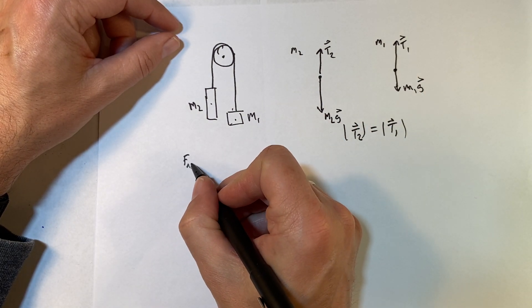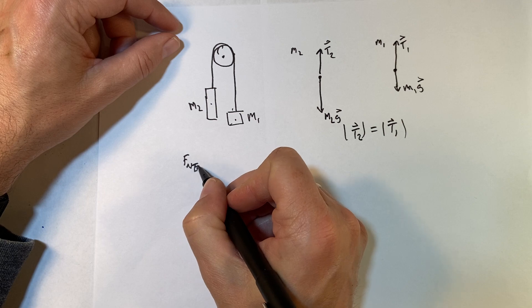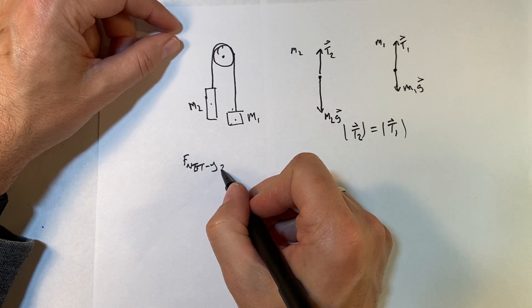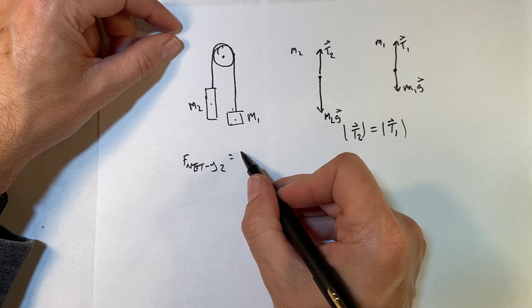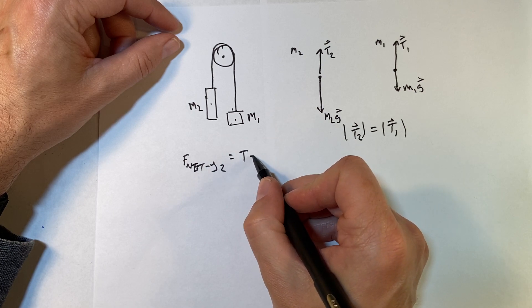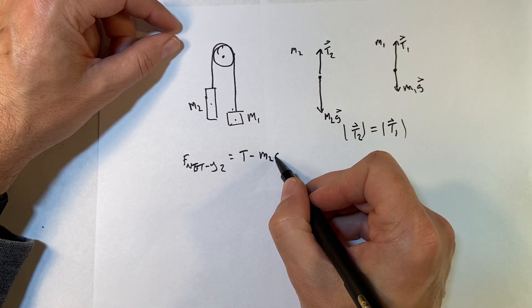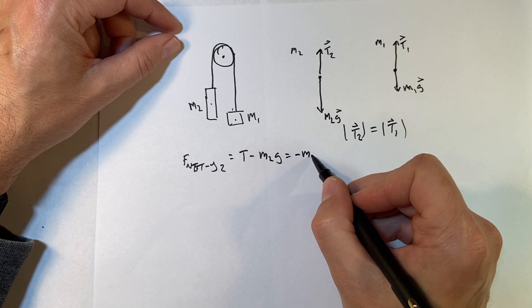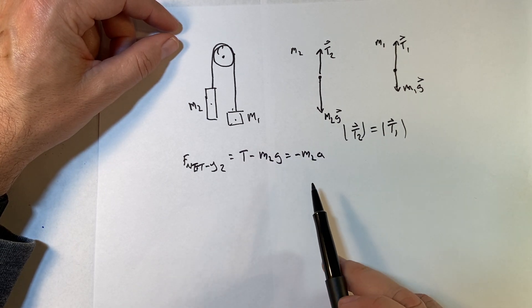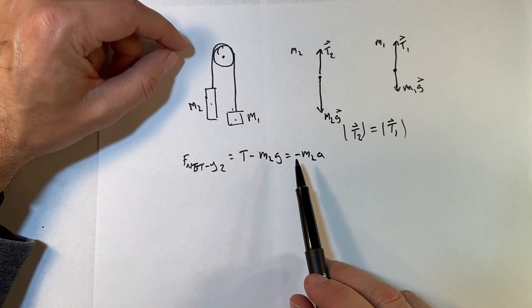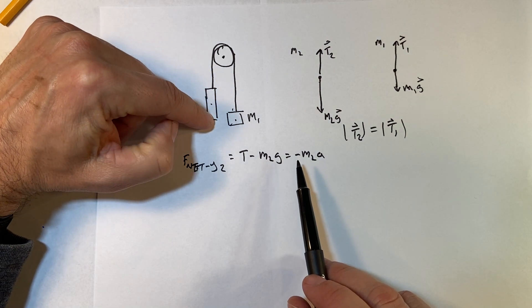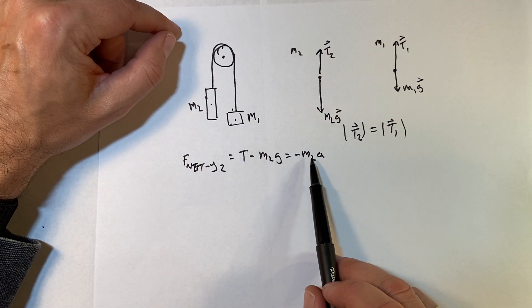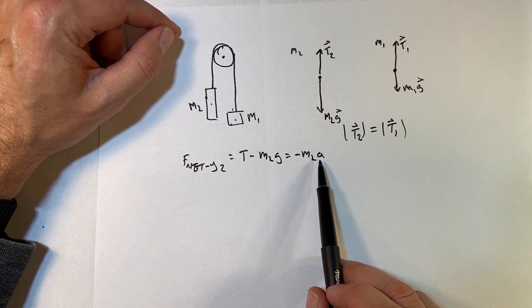So I can write: F_net y2 — for this mass — equals t minus m2g, equals negative m2a. In this case I knew it was going to accelerate down, so I went ahead and put the negative sign right there, and I'm just using a positive value for a.